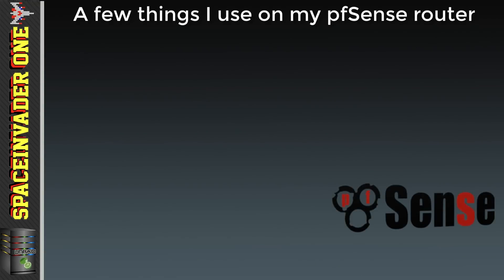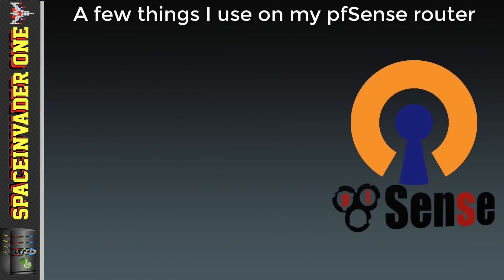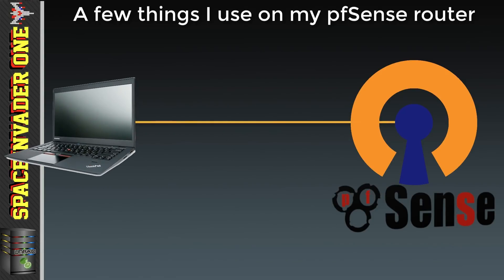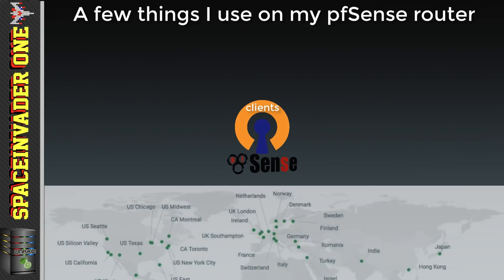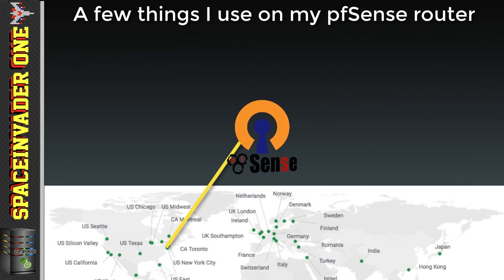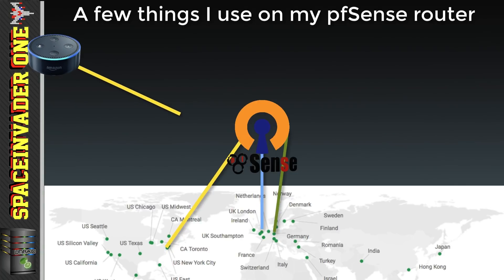So what else does PFSense do for me? It runs my OpenVPN server so I can access my network when I'm away from home. But as well as an OpenVPN server, I also run multiple OpenVPN clients going to various Private Internet Access endpoints — one to the USA, one to the UK, and one to Germany. With this setup, I can choose which devices on my network connect to which endpoint. For instance, all of my Internet of Things devices such as my Amazon Alexa connect through the USA endpoint, and they're also in their own VLAN so they can't see anything else on my network.